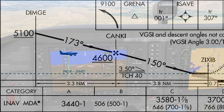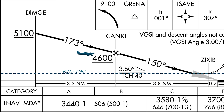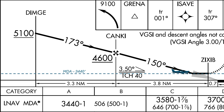This feels like a precision approach, but when we get to the MDA, it's not the time to go missed. If we treat the MDA like a decision altitude, we arrive at 3,440, decide to go missed, transition from a descent to a climb, and dip below MDA briefly as we do so.